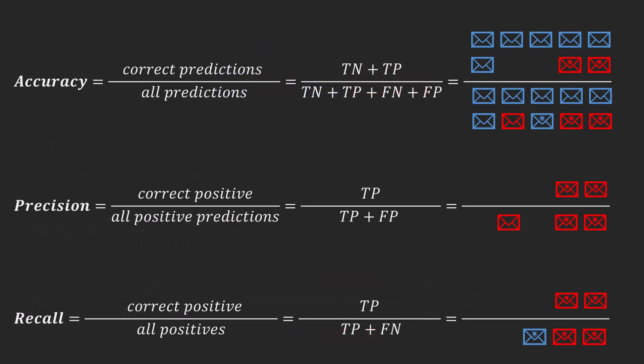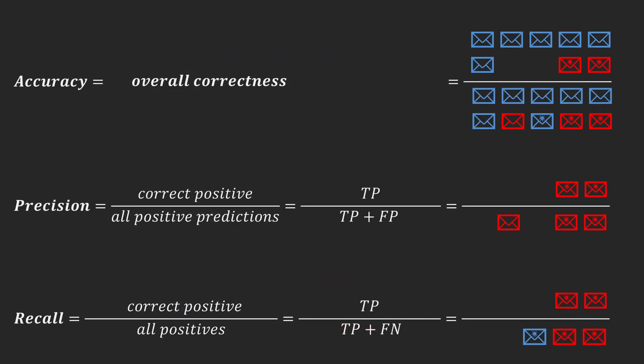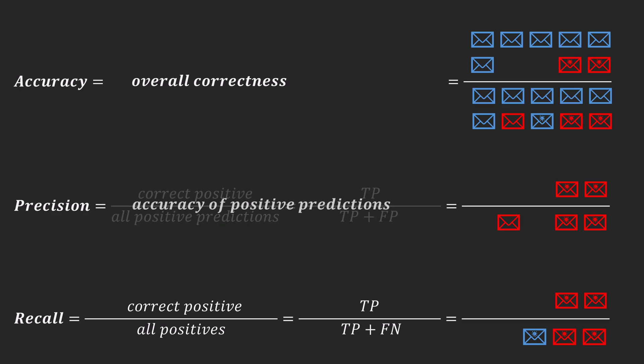To summarize, accuracy measures overall correctness, while precision measures the accuracy of positive predictions, reflecting how reliable a spam alert is.